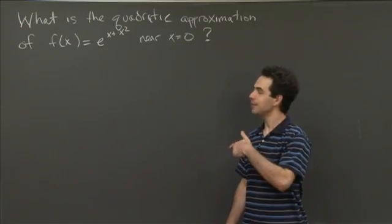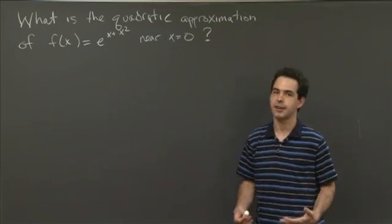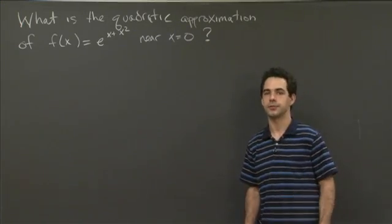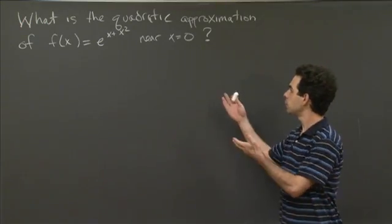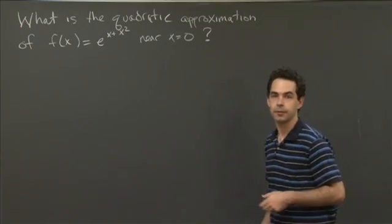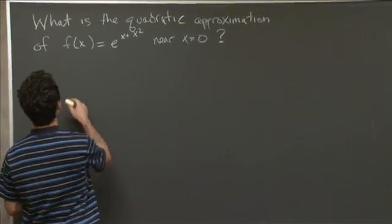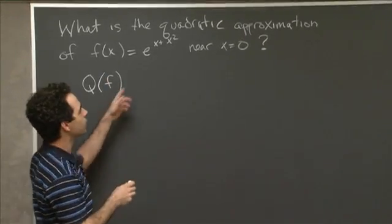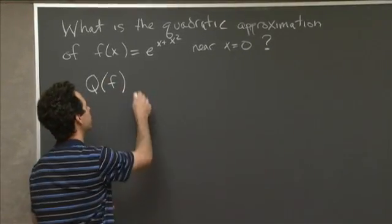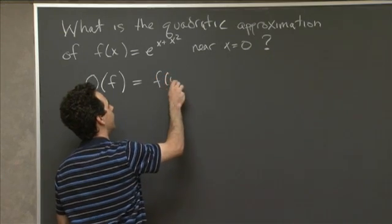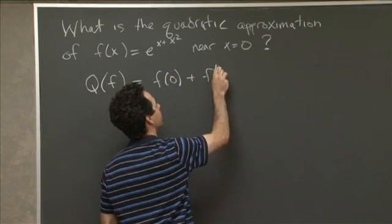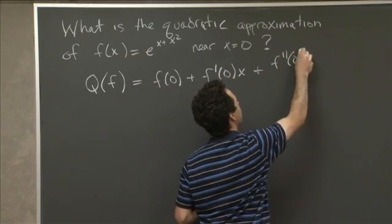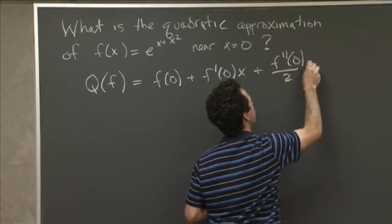So there are two different ways we can do this problem. Let's first just do it the totally straightforward way, which is that you have this formula for quadratic approximations in terms of the derivatives of your function. So the formula is that the quadratic approximation Q(f), near the point 0, is equal to f(0) + f'(0)x + f''(0)/2 times x².